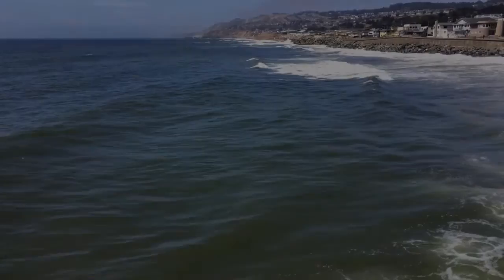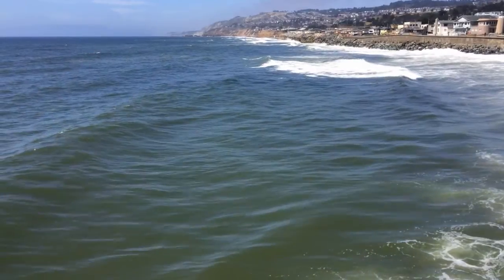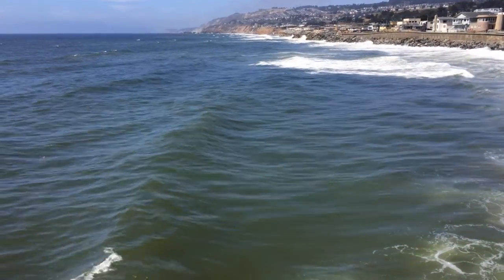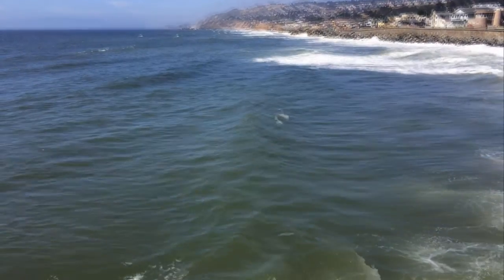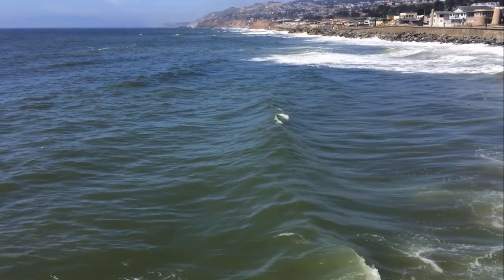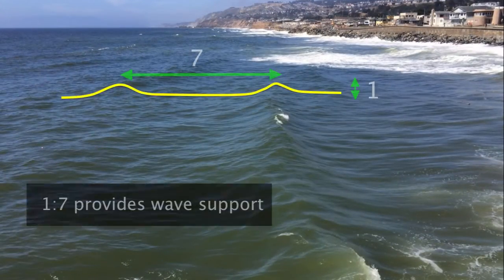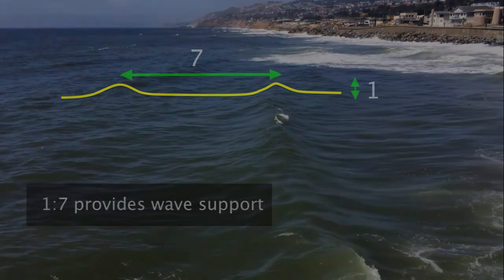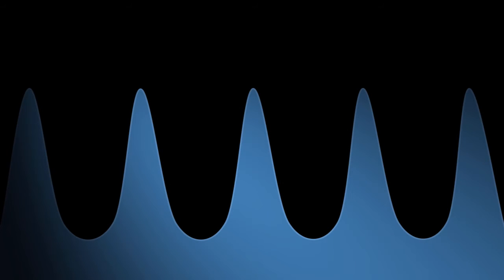To get a stable wave height, waves will generally have a ratio of height to wavelength of about 1 to 7, which gives the wave sufficient support to stay up. Some storms can produce steeper waves, but anything much higher will tend to fall over.